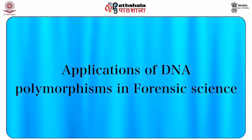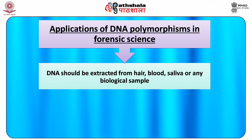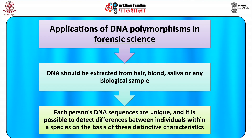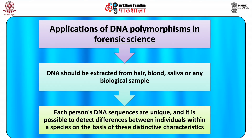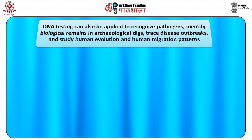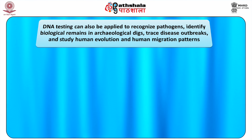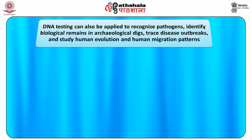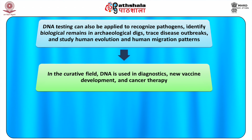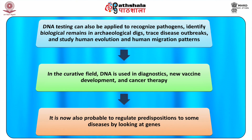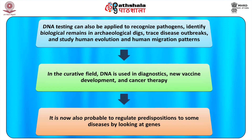Applications of DNA polymorphisms in forensic science: DNA should be extracted from hair, blood, saliva, or any biological sample. Each person's DNA sequences are unique, and it is possible to detect differences between individuals within a species on the basis of these distinctive characteristics. DNA testing can also be applied to recognize pathogens, identify biological remains in archaeological contexts, trace disease outbreaks, and study human evolution and migration patterns. In the curative field, DNA is used in diagnostics, new vaccine development, and cancer therapy. It is now also possible to determine predispositions to some diseases by looking at genes.